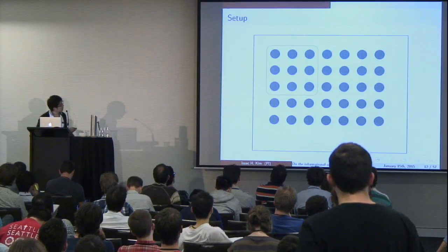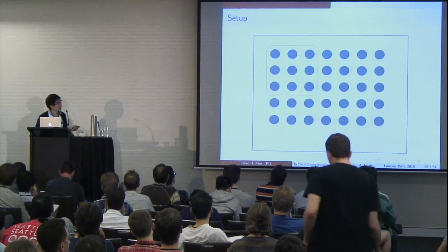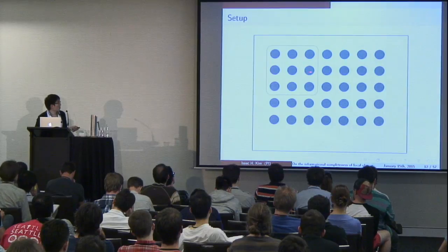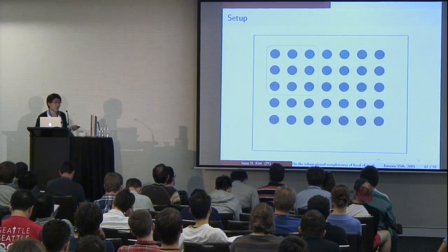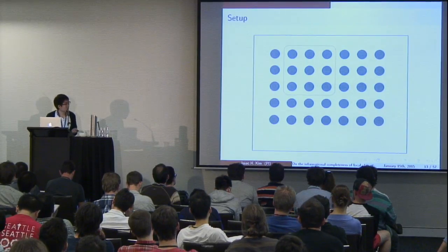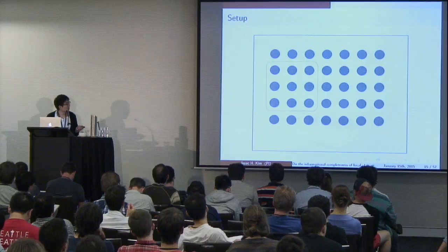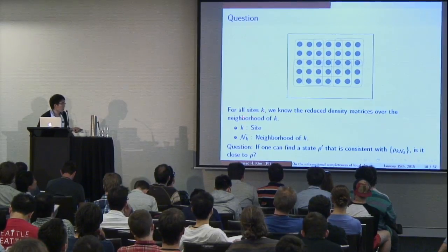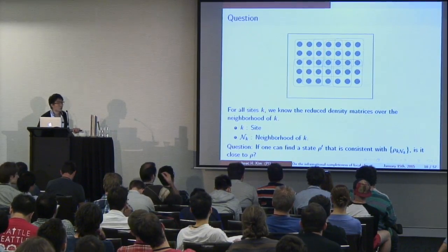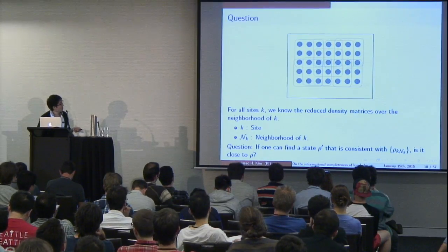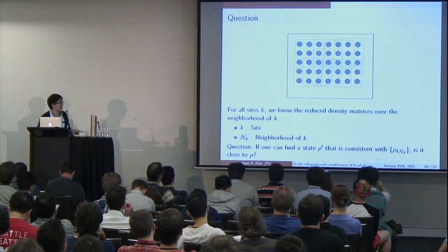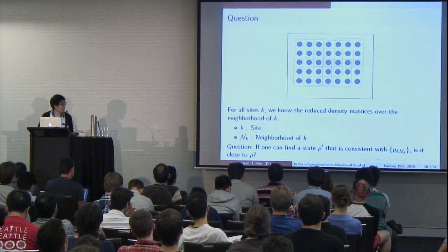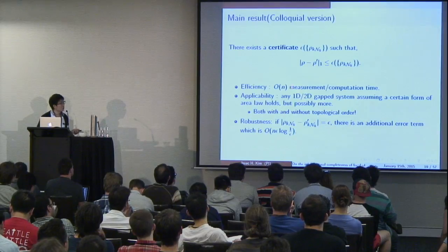Just to be clear, this is the setup. It doesn't have to be a two-dimensional system, but for clarity, suppose you have a 2D system where the dots are qubits, and you know the reduced density matrix over, let's say, these nine particles — nine is some constant — and similarly for all other sites. For all sites K, representing a qubit, you know the reduced density matrix over K and the neighborhood of K. The question is: suppose you find a state rho-prime consistent with these local measurement data — is it close to rho? In general the answer is no, obviously, but I'll be able to prove a theorem.